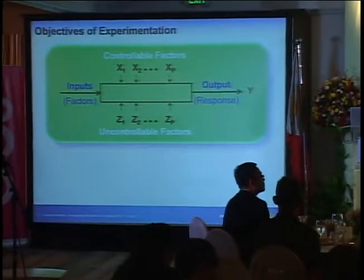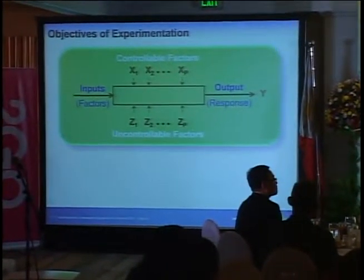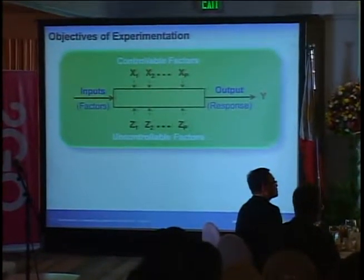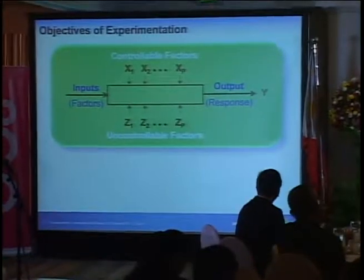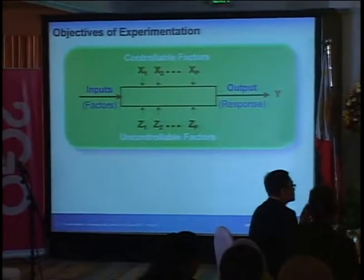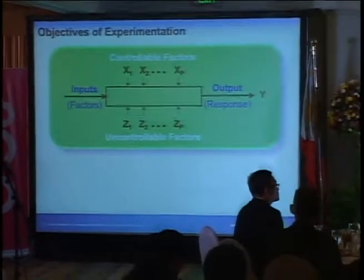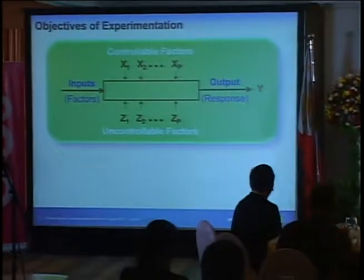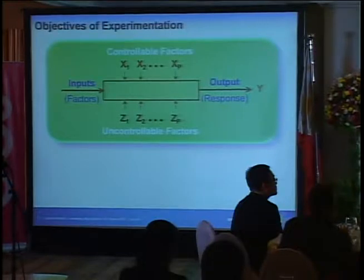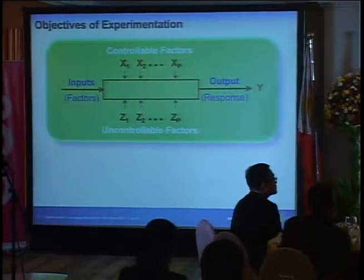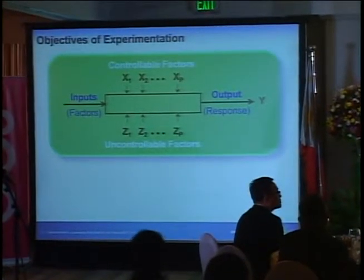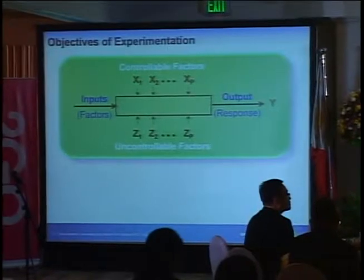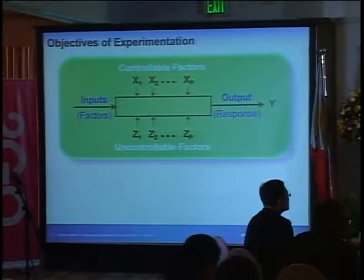To generalize the objective of experimentation, consider a process model where you have inputs — most of which you control, some you do not because they're practically impossible or very difficult to control — and of course you have the output.